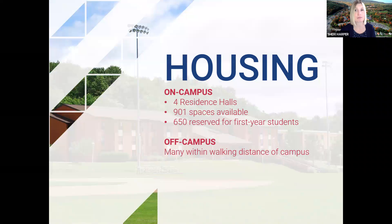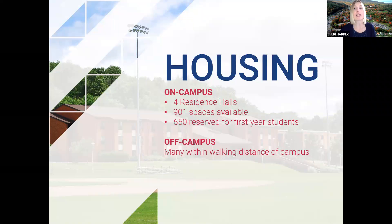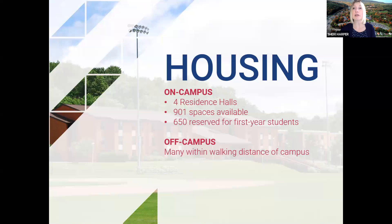Penn State Altoona is one of the campuses that offers on-campus housing. We have four residence halls — two traditional and two suite style — accommodating 901 of our roughly 3,100 students, with 650 spaces going to incoming first-year students. When on-campus housing fills, we start a waitlist. Many campuses also offer off-campus housing, which is privately owned and operated — it could be a large apartment complex, a smaller apartment, or a house for rent, often within walking distance to campus.